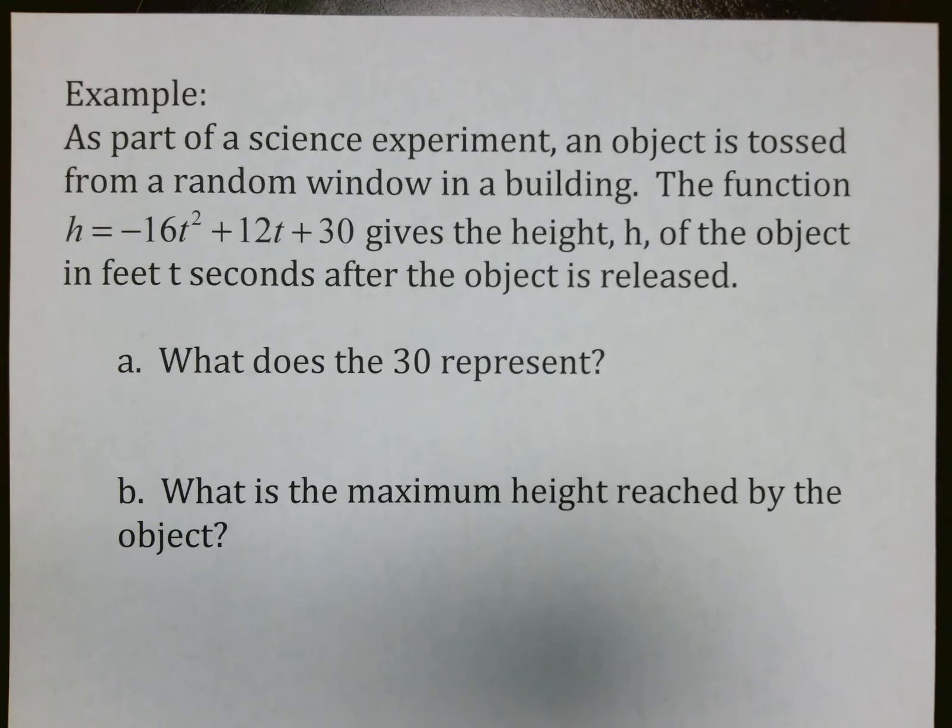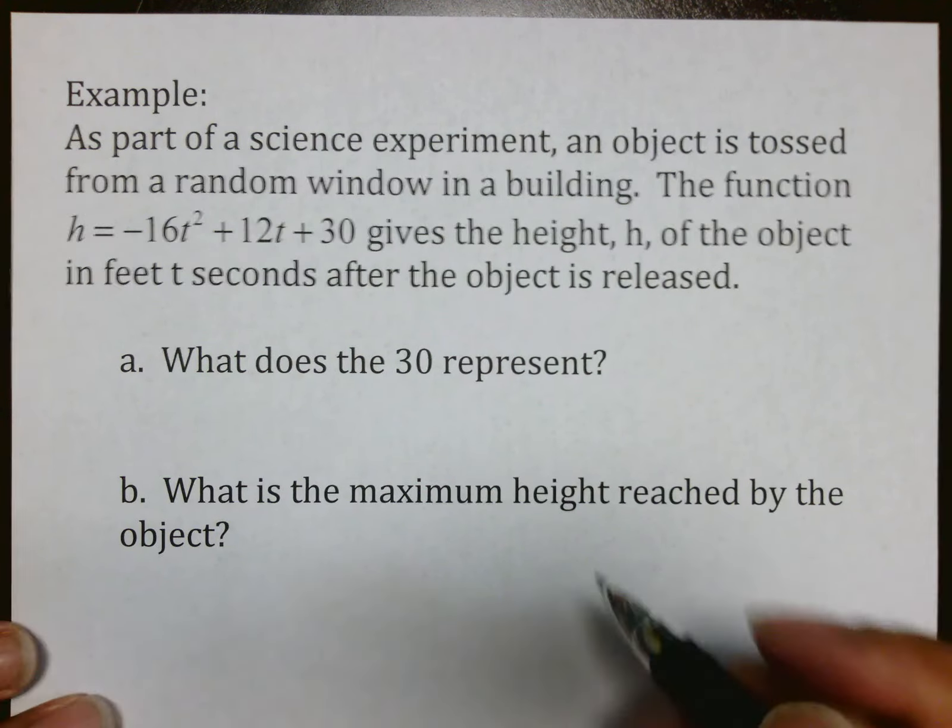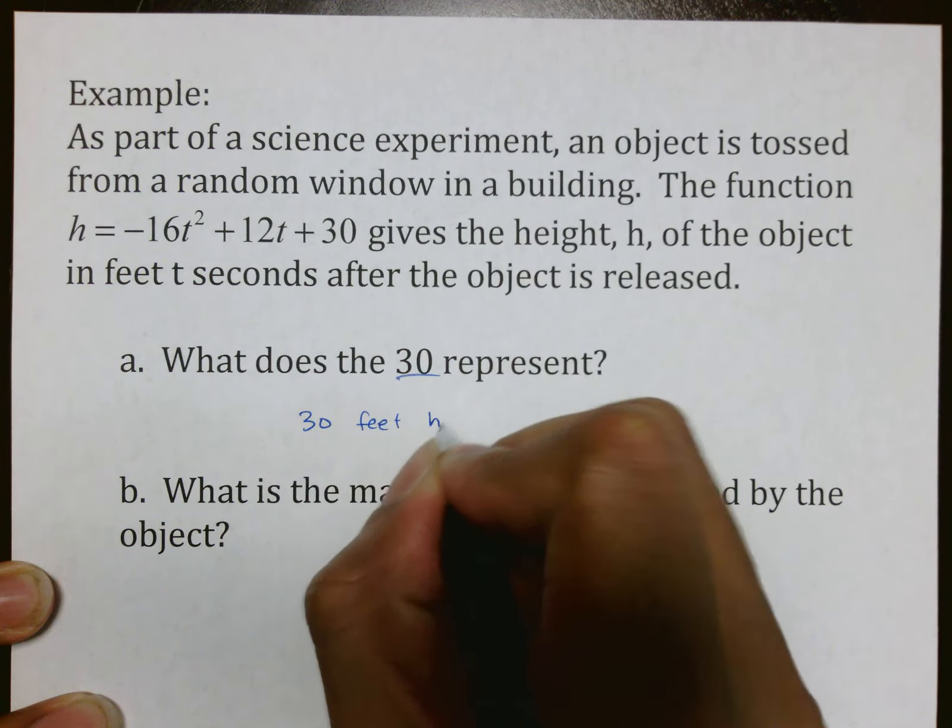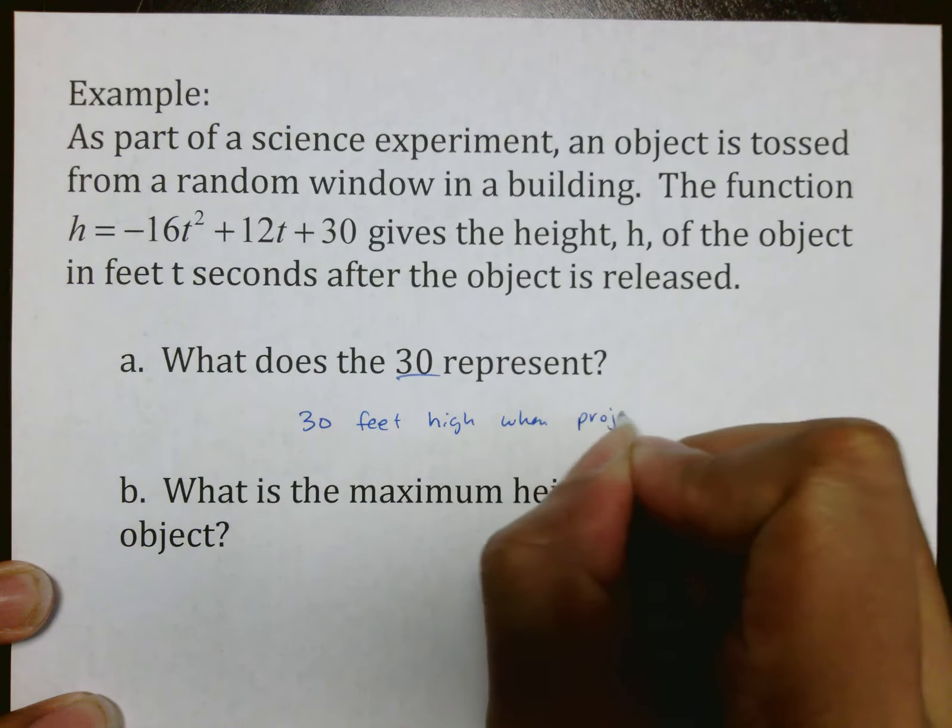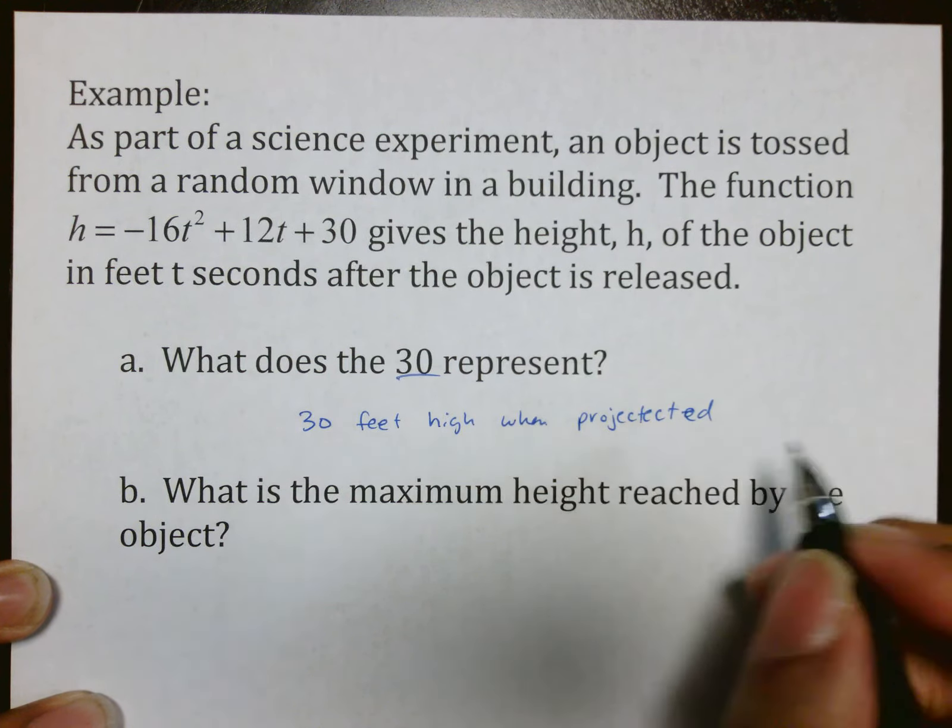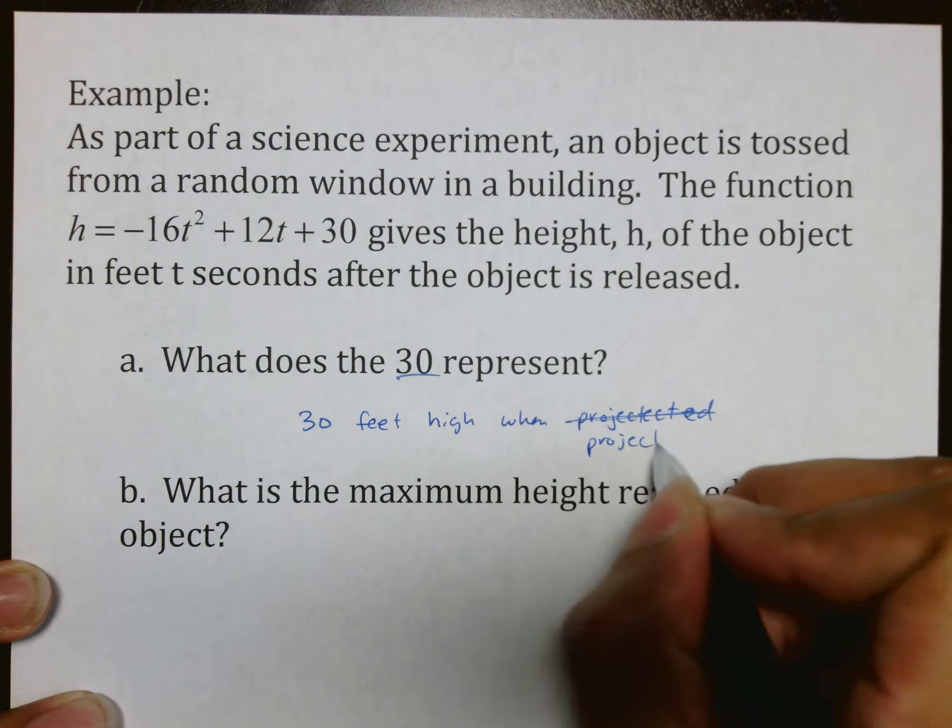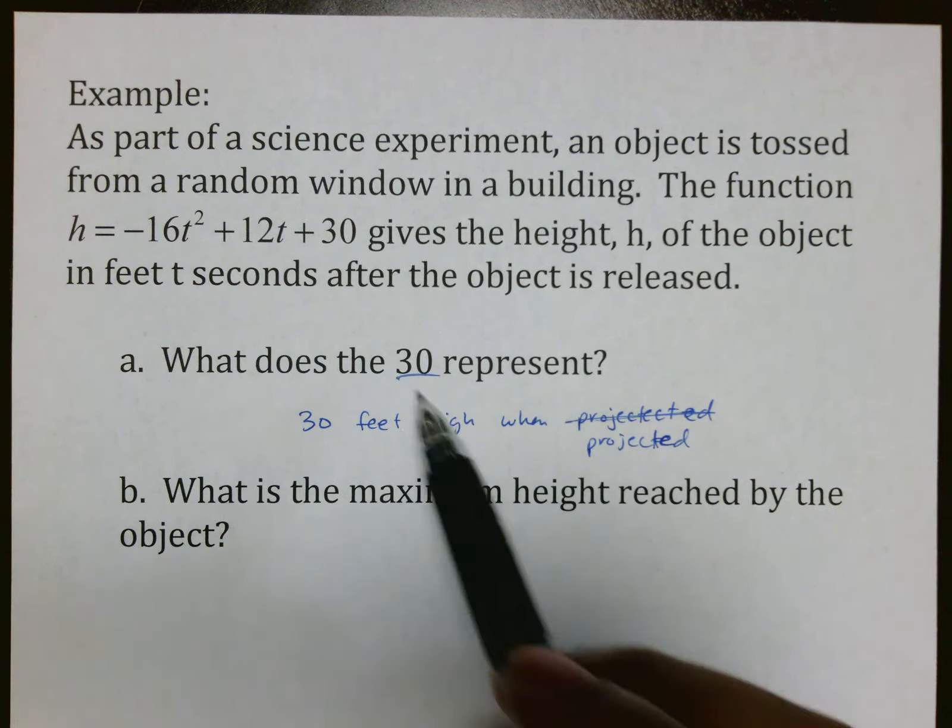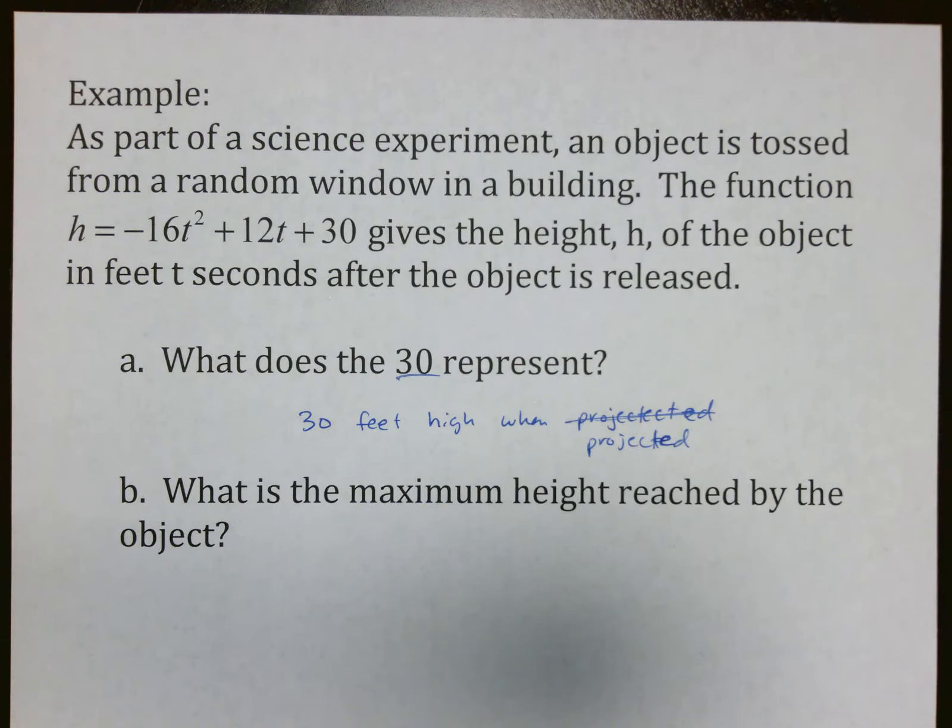So let's look at this example. As part of a science experiment, an object is tossed from a random window in a building. The function h = -16t² + 12t + 30 gives the height h of the object in feet t seconds after the object is released. What does 30 represent? The first question I'm going to ask you is what does 30 represent? That means it was 30 feet high when projected or tossed. The 30 represents your y-intercept, that means that the object was 30 feet high when everything started.